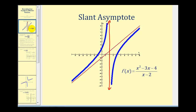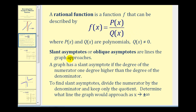Here we see a graph of a rational function that has a slant asymptote. A slant asymptote is just like a vertical or horizontal asymptote in that it's a line the graph approaches, but instead of being vertical or horizontal, it's a slanted line. Slant asymptotes, sometimes called oblique asymptotes, are lines the graph approaches.